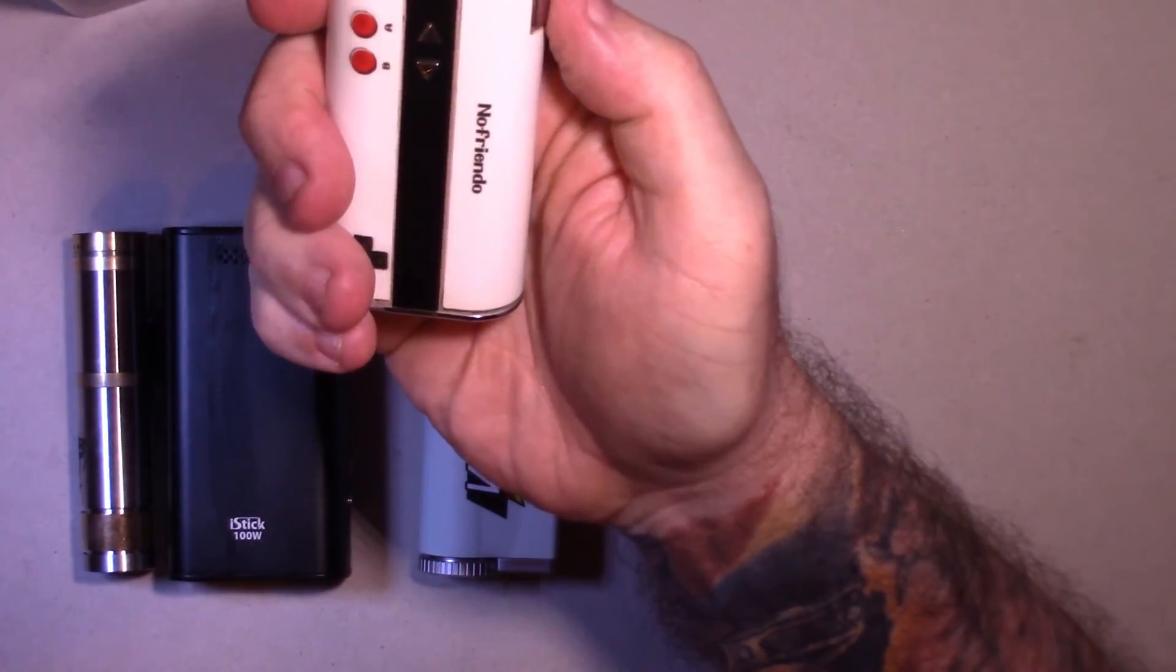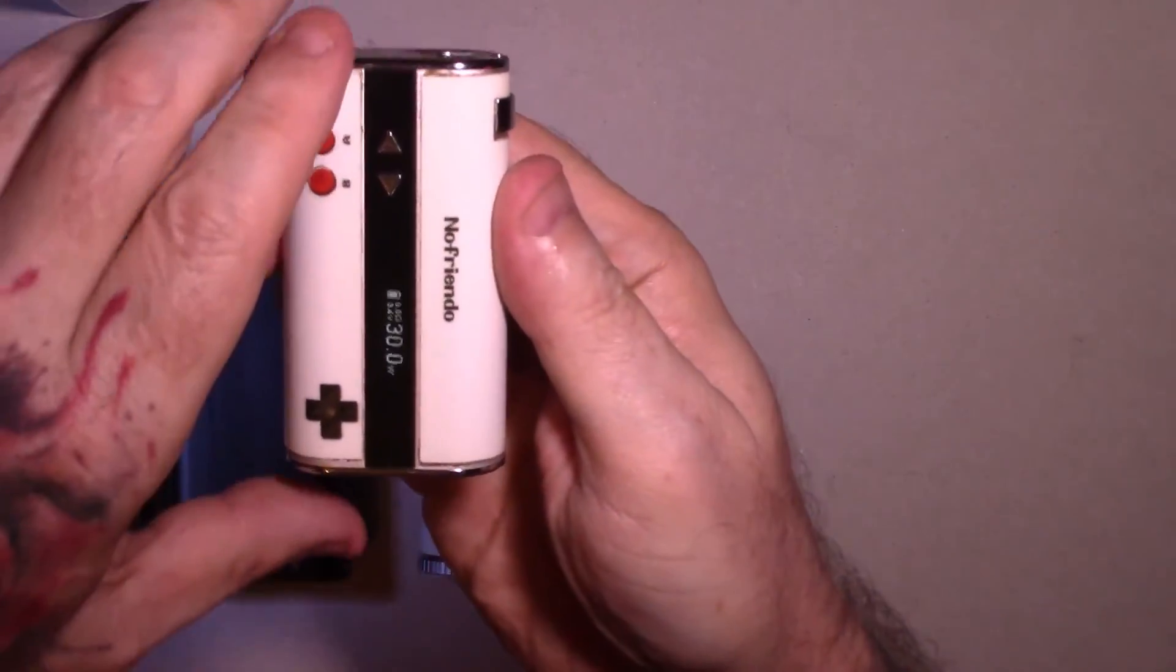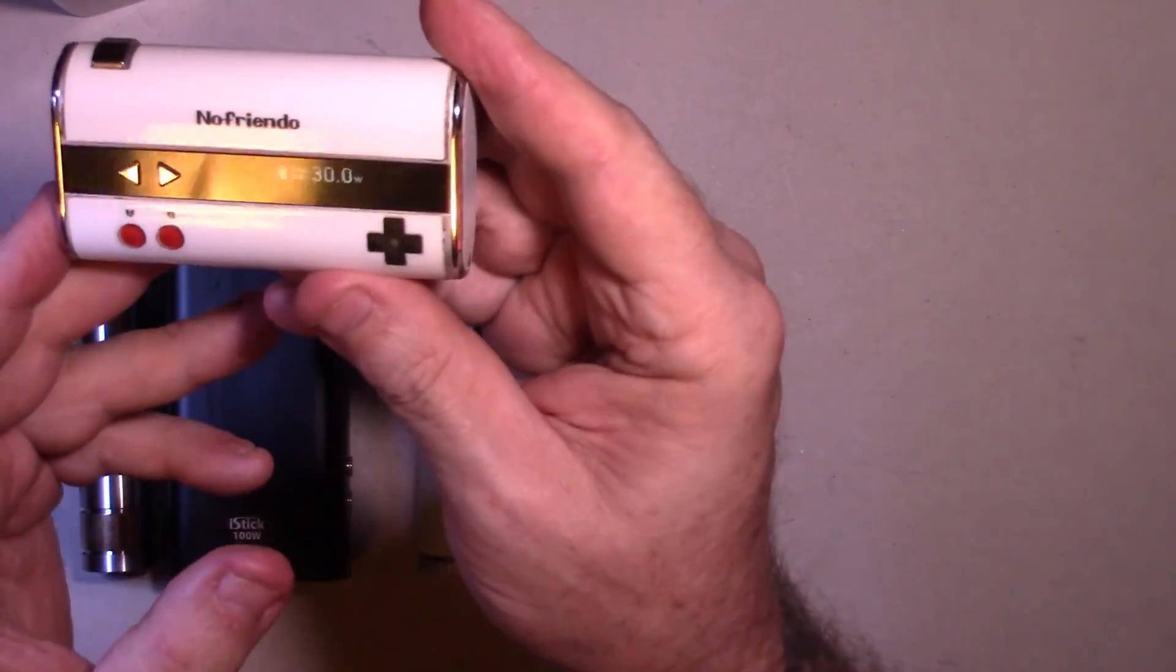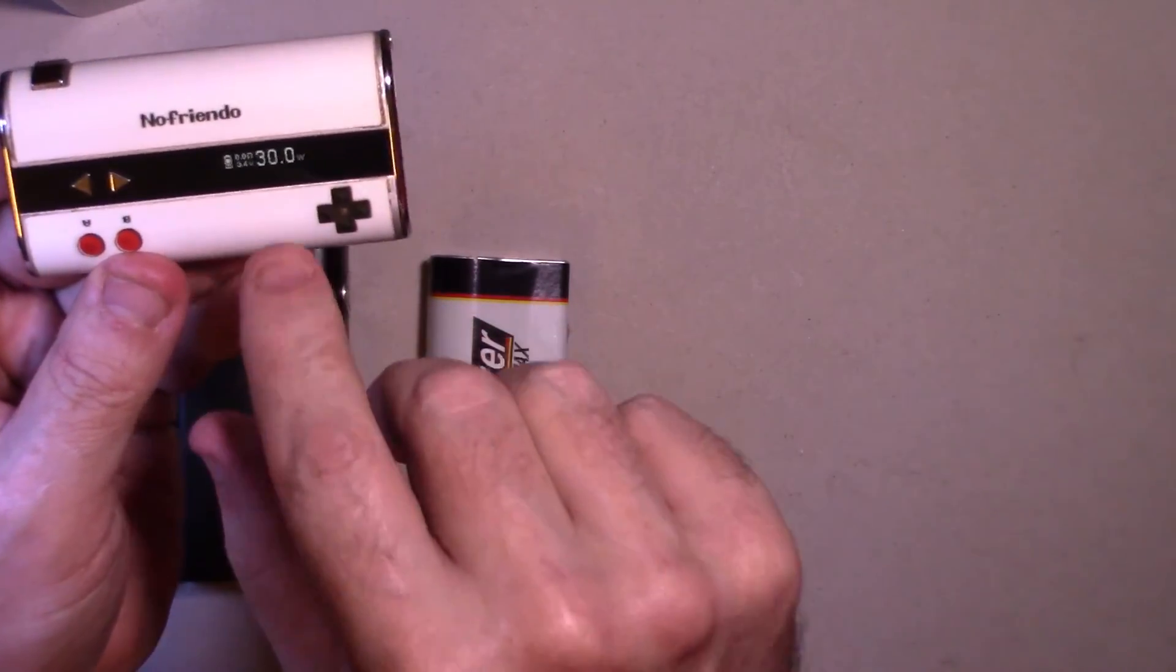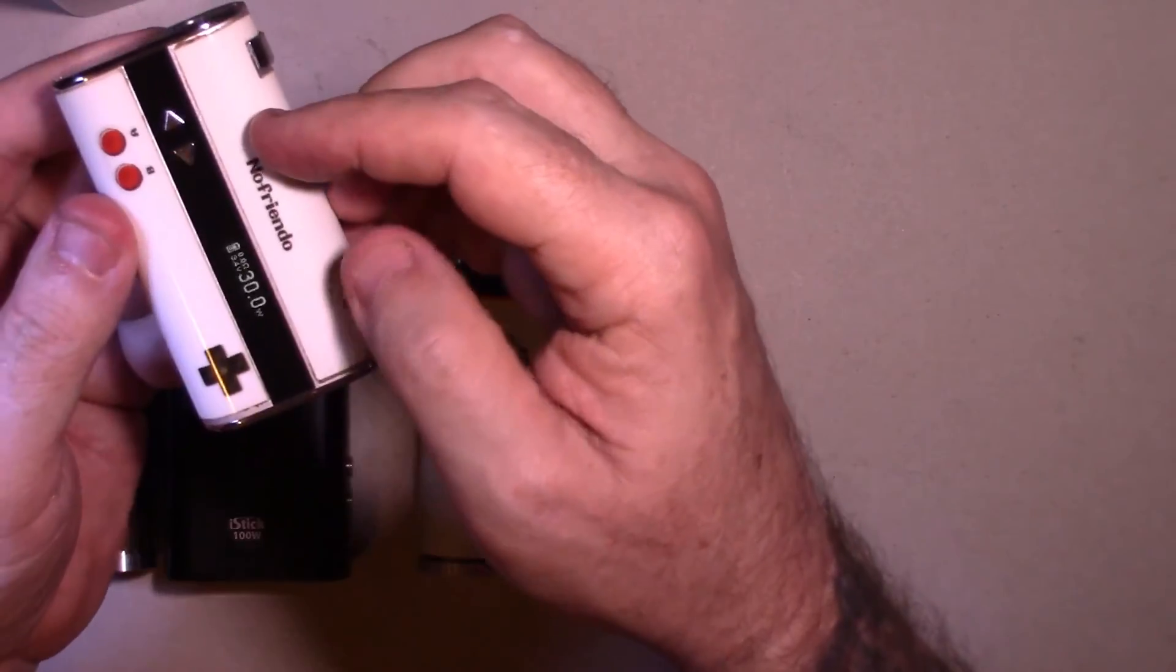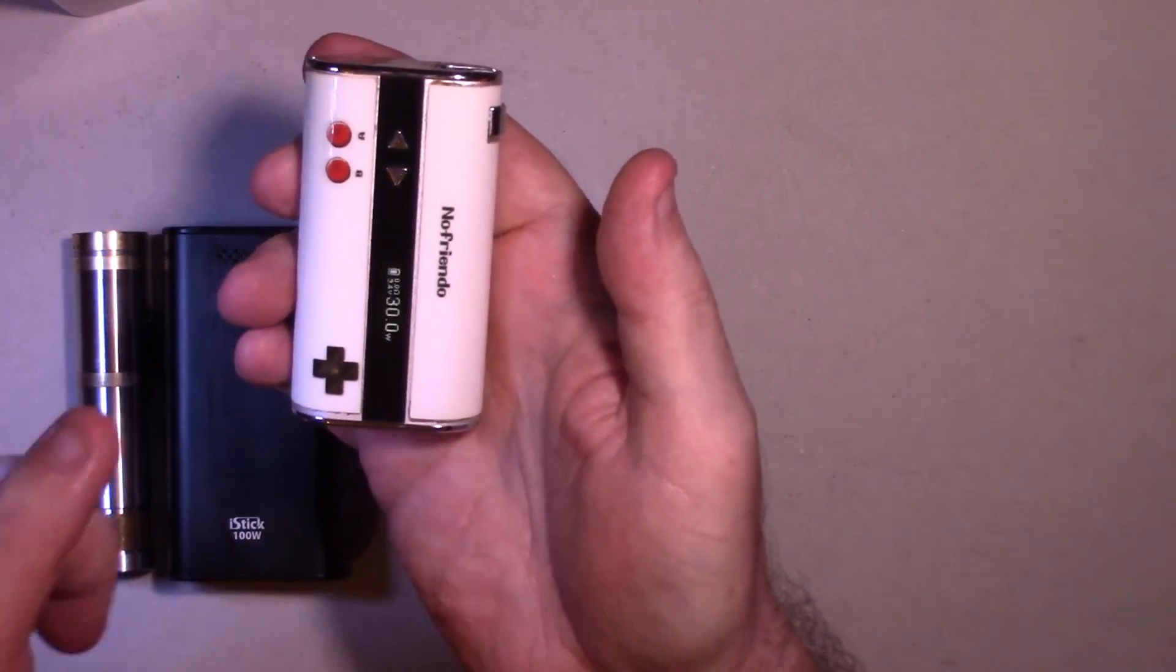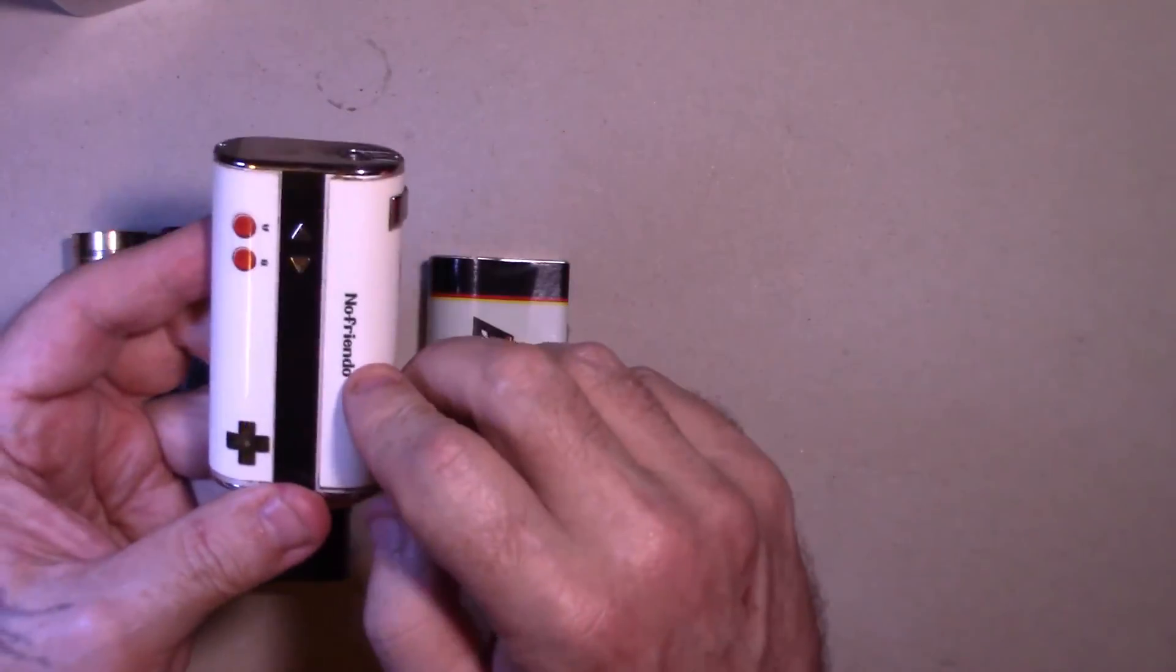These ones - couple clicks, turns them on. It'll display the ohms of whatever tank or RDA or whatever you put on top. It has a wattage mode and a voltage mode, and it has a battery life. They usually have some sort of up and down and a fire button. There's a board and a chip in here that regulates the output of the battery.